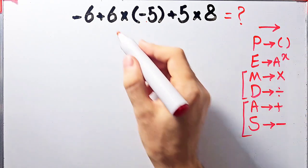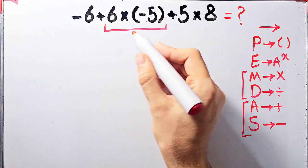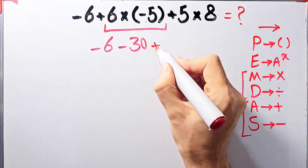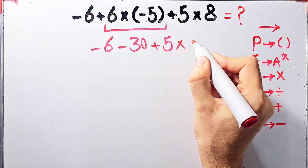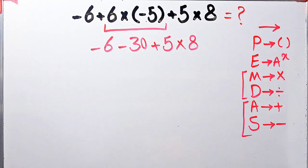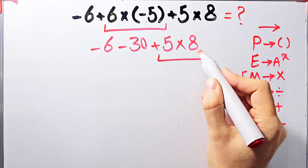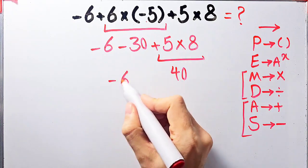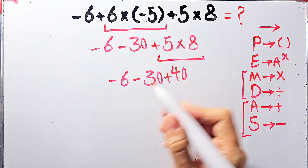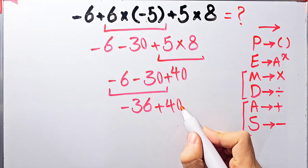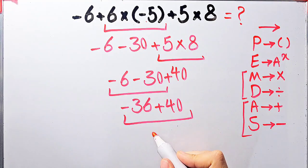First we simplify 6 times negative 5, which equals negative 30. Now the question is negative 6 minus 30 plus 5 times 8. Next we simplify 5 times 8, which equals 40. Now the question is negative 6 minus 30 plus 40. Negative 6 minus 30 equals negative 36, and negative 36 plus 40 equals 4. The final answer of this question equals 4.